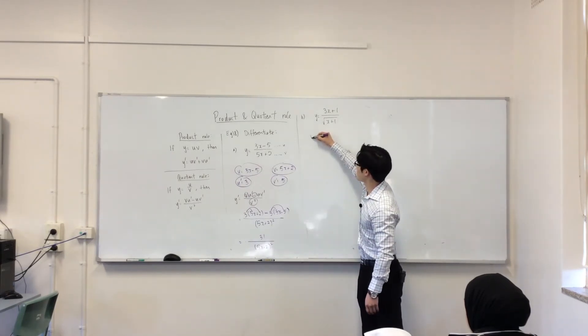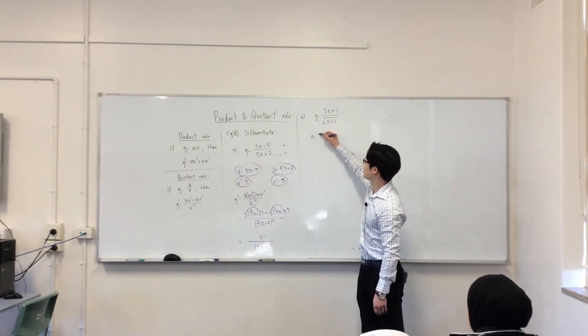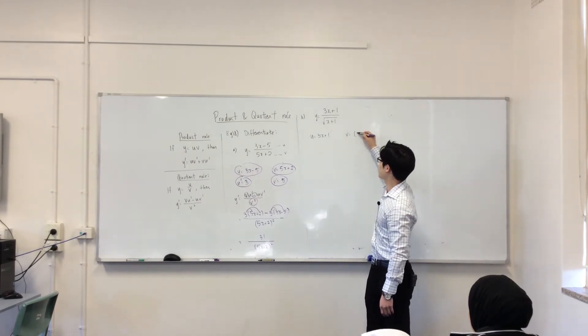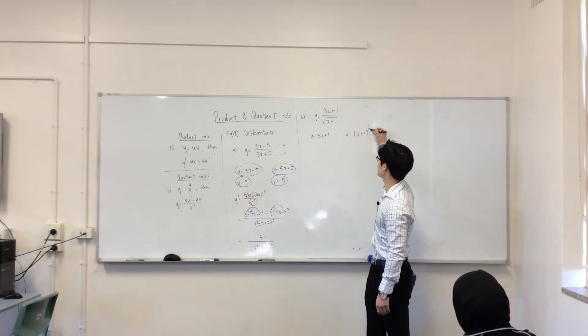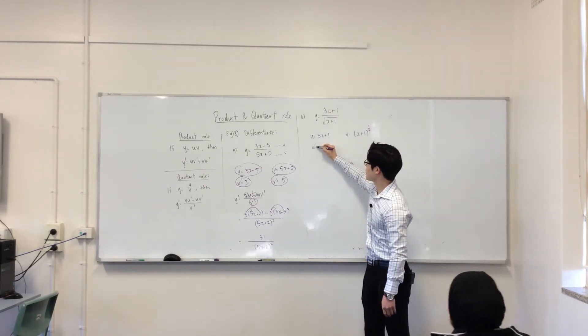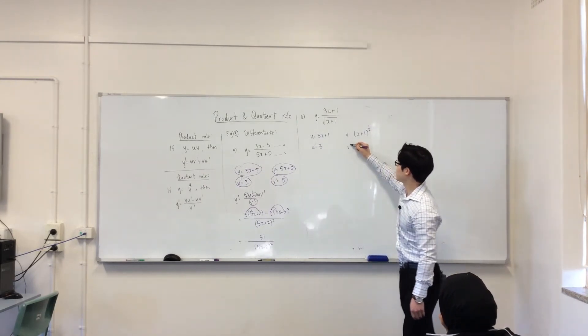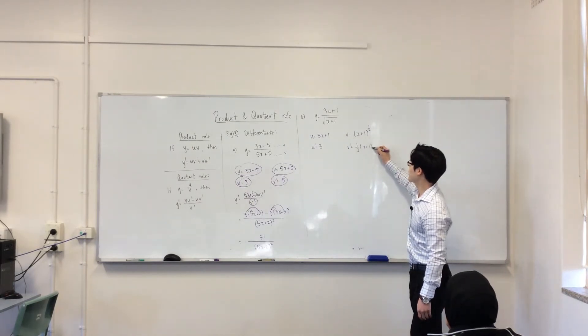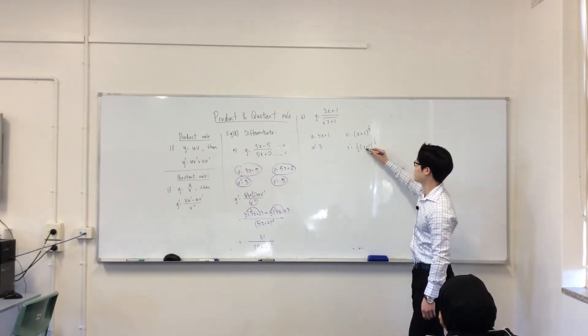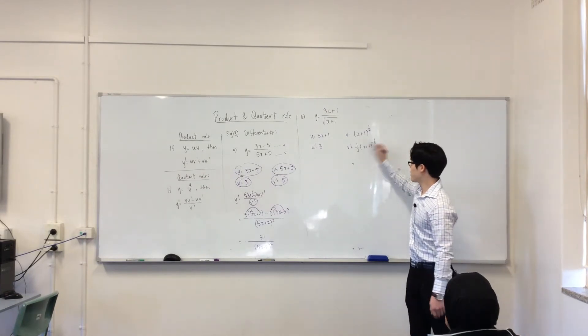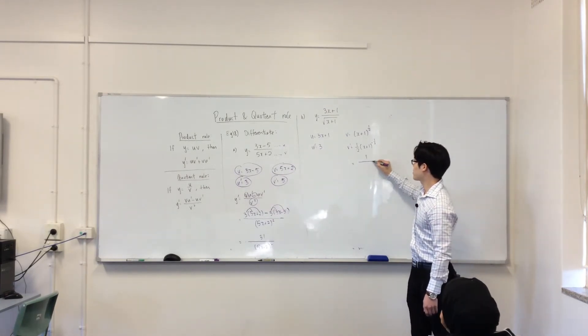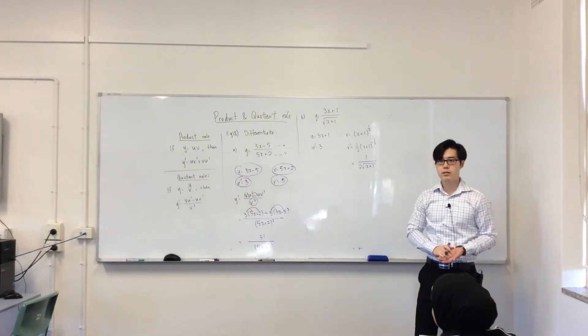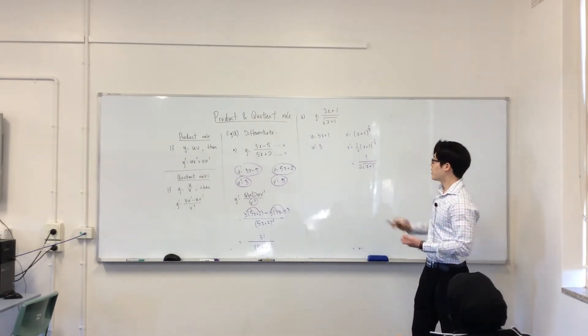Same thing. Let's label my u. What's my u? Good. Now, my v. I'm going to write it in terms of power, because we always want the power when we differentiate. My u dash is 3, my v dash is half (x + 1)^(-1/2) times 1, but that's nothing. This, remember, is the same thing as writing this. Are you with me on that?